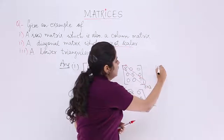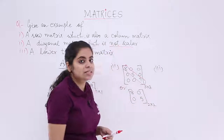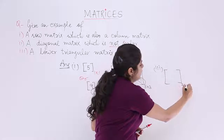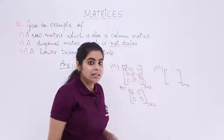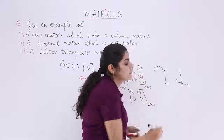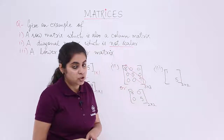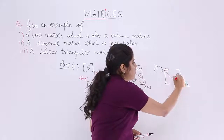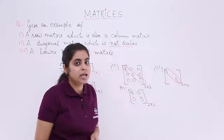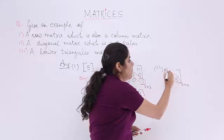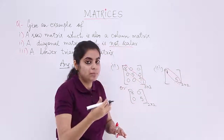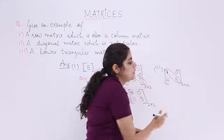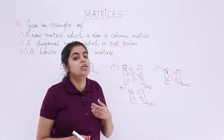For a 2×2 lower triangular matrix, let the diagonal elements be 1 and 5. Since it is a lower triangular matrix, first note the diagonal, then make the upper elements 0. So the upper off-diagonal element would be 0, and the lower off-diagonal element can be non-zero. This is because it is a lower triangular matrix.